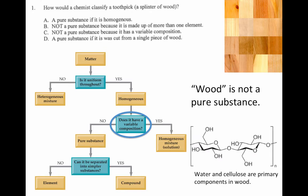Remember, variable composition allows us to distinguish between something that is a homogeneous mixture and a pure substance. At a chemical level, does wood contain multiple pure substances or is it a pure substance all by itself? Wood is not a pure substance. It contains chemicals like water and cellulose. These are the primary components in wood.